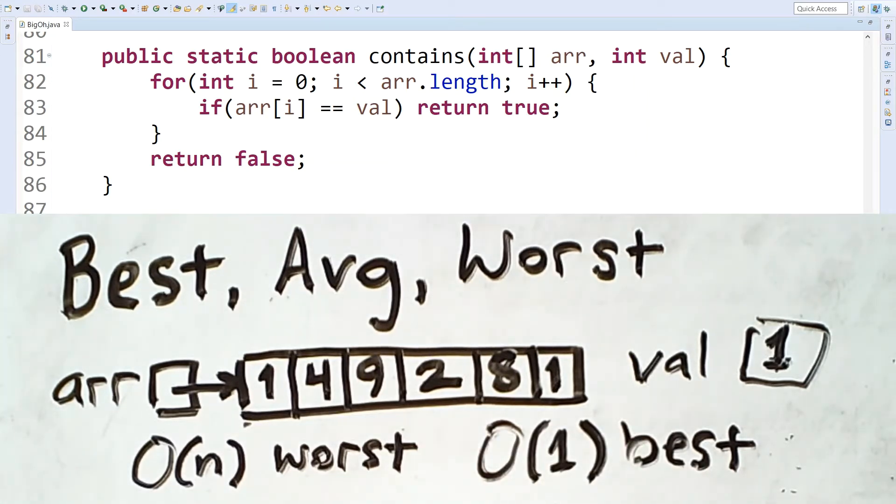This leads us to the final case, which is the average case. Figuring out the average case is tricky, and depends on considering all possible inputs to the program. So, in this particular example, because there are so many possible inputs to the program that will require us to search the entire array, and considering the fact that even if we find a value, for example, 9 or 2 inside the array, we still have to check at least half of it,